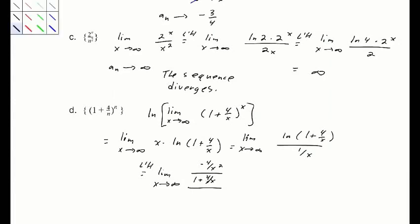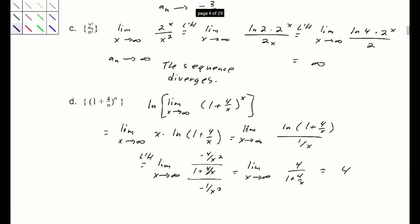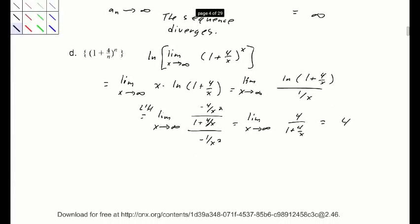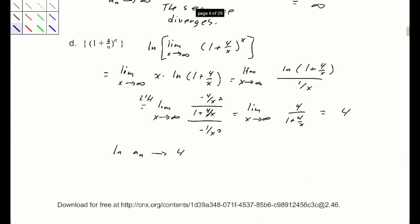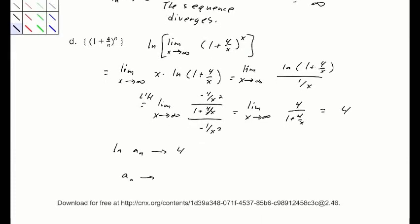Divided by the derivative of 1 over x, which is negative 1 over x². Rearranging that complex fraction gives the limit of 4 over (1 plus 4 over x), and that limit is 4. We can observe that the natural log of our sequence is converging to 4. Since the natural log is continuous, a_n, the sequence itself, converges to e⁴.